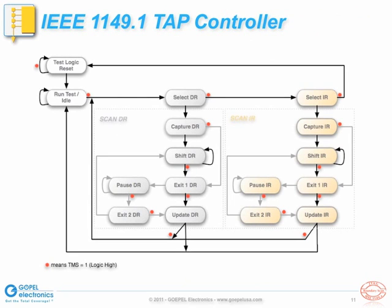This slide shows the 16 states of the TAP controller state machine. As discussed, this state machine is controlled by the TClock and TMS signals. The arrows in the diagram indicate state transitions, and the red dots next to state transitions indicate a logic high level of the TMS signal. Upon power-up, all IEEE 1149.1 compliant devices are in the Test Logic Reset state. From there, one can move from state to state by setting TMS to the respective level and applying a TClock. You can return to the Test Logic Reset state from any other state in five or fewer TClocks while keeping TMS at logic high.